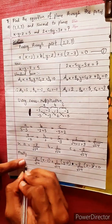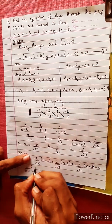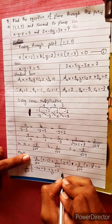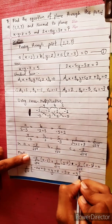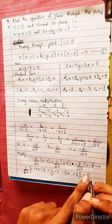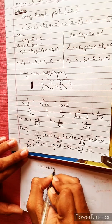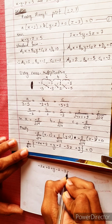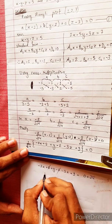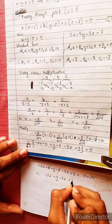Taking 1/√14 as common factor: -2x + 2 + y - 2 - 3z + 9 = 0. The +2 and -2 cancel, giving: -2x + y - 3z + 9 = 0.